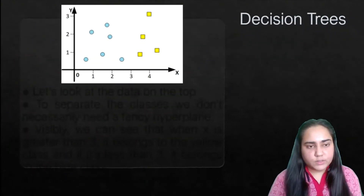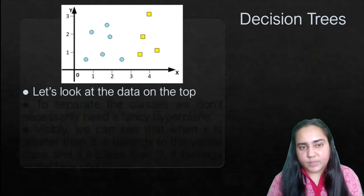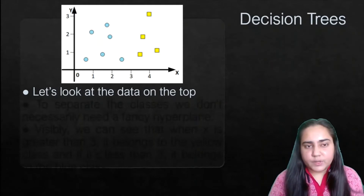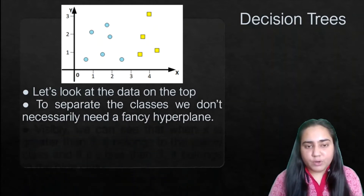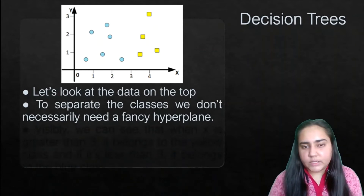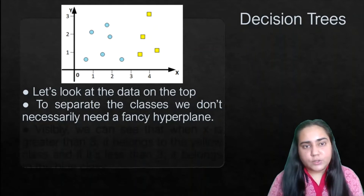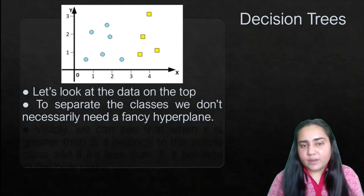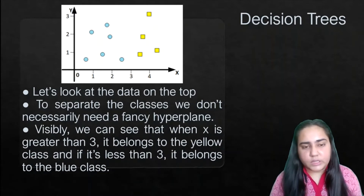First of all, what are decision trees? Let's take a look at this data — it's a simple scatter plot and it does not contain a lot of data points. There are some data points which are blue circles and some which are yellow squares. To separate the classes we don't necessarily need a fancy hyperplane, as is done in a support vector machine algorithm. You can use decision trees instead, because you can see just from the data itself very clearly that